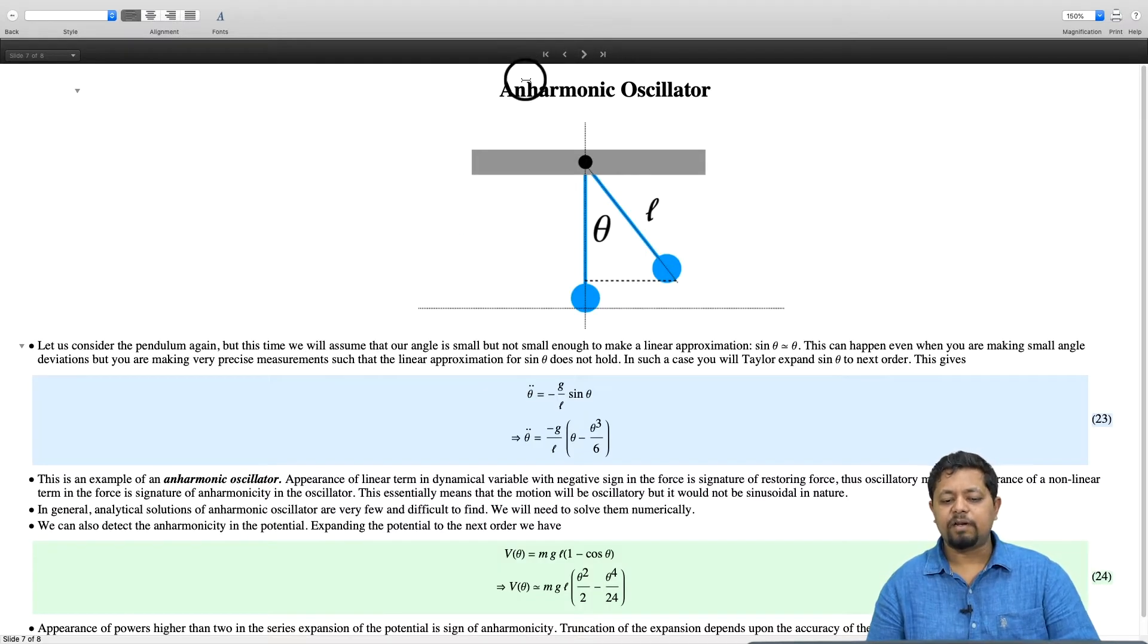Let us go ahead and look at an example of an anharmonic oscillator. Again, building up from a simple case into a more complex case, we look back at the simple pendulum again. Last time, we showed you that the equation for the simple pendulum was theta double dot equal to minus g by l sine theta.